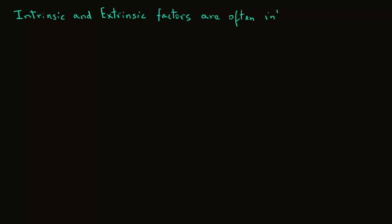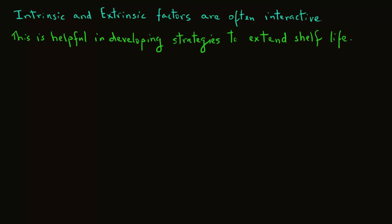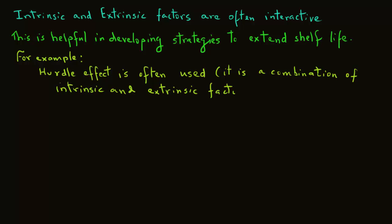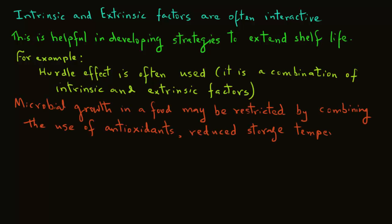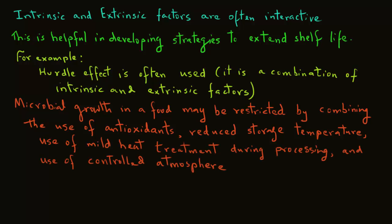These intrinsic and extrinsic factors are often interactive. This is useful in developing strategies to extend the shelf life of foods. For example, the hurdle effect is a combination of intrinsic and extrinsic factors, where microbial growth in a food may be restricted by combining the use of antioxidants, reduced storage temperature, use of mild heat treatment during processing, and use of controlled atmosphere packaging.